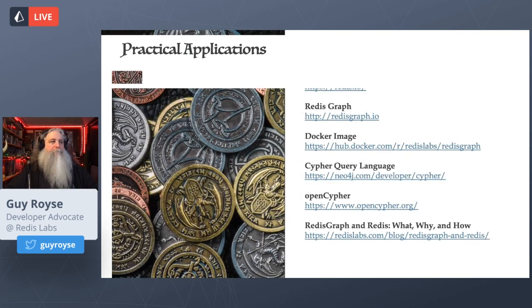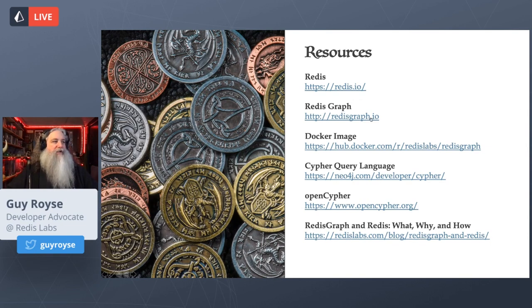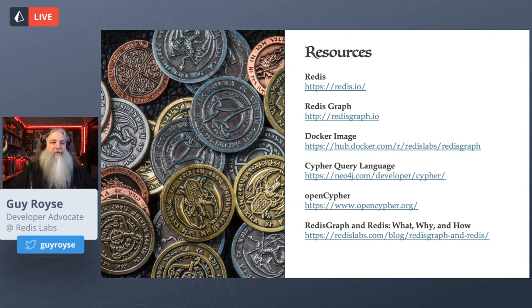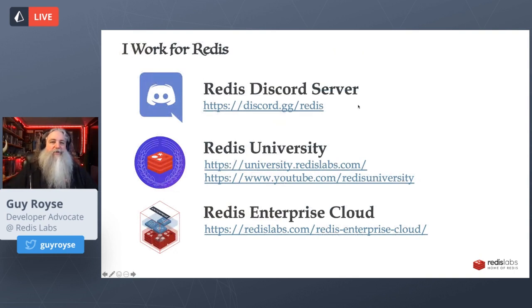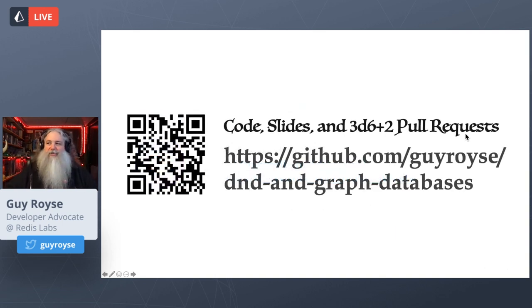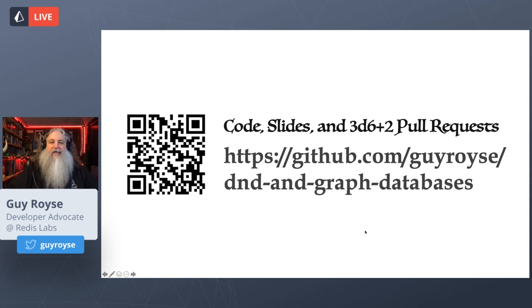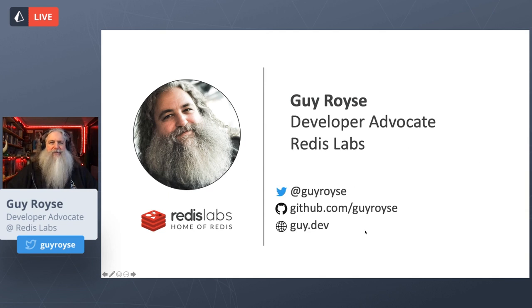For resources: if you want to play with Redis Graph, go to redisgraph.io for all the information on getting started. The Cypher query language was developed by Neo4j and there's a reference at opencypher.org. I've got a blog post on Redis Labs about this as well, and you can get on our Redis Discord server — I'm the admin so I'm always on there, feel free to ask questions. We've got free courses, and I used Redis Enterprise Cloud to run my graph queries. All this stuff including the slides can be gotten via the QR code shown here.